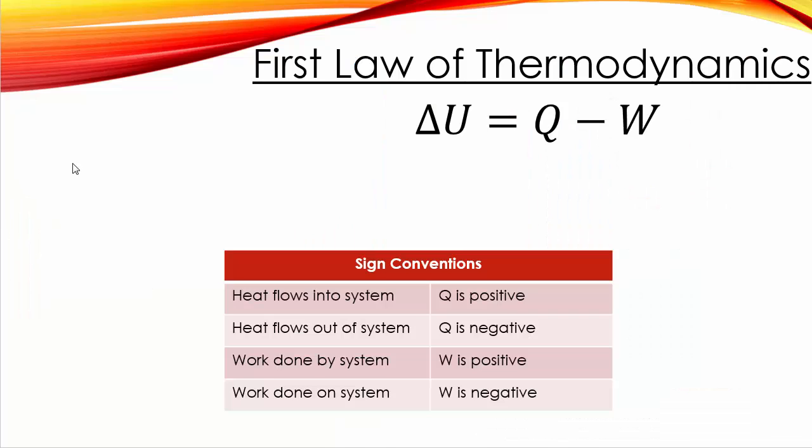First law of thermodynamics, which was developed before we had a full understanding of the law of conservation of energy, says delta U equals Q minus W. This U is what we call the internal or thermal energy. Q we've already encountered as well, that is the heat flow. And W is our old friend work. Now this equation here is known as the first law of thermodynamics, and it's just a statement of conservation of energy.